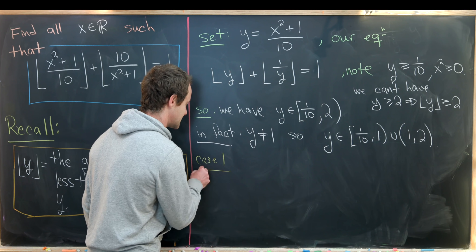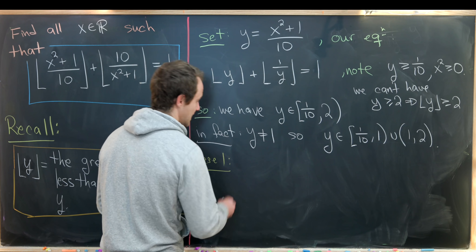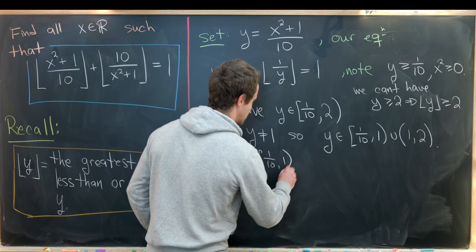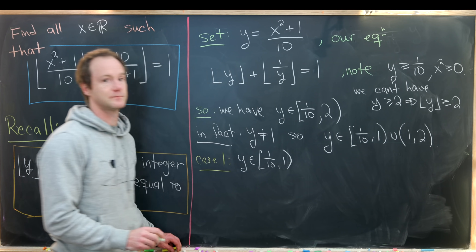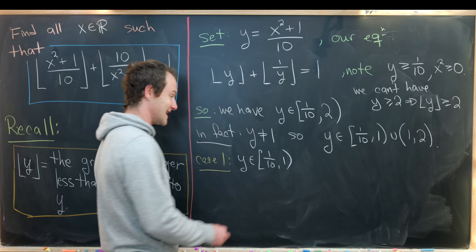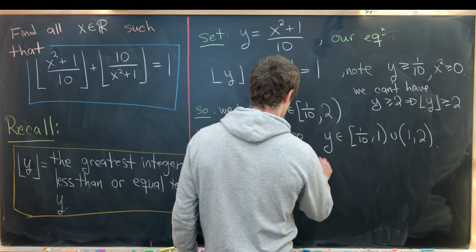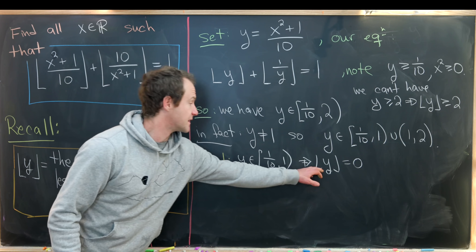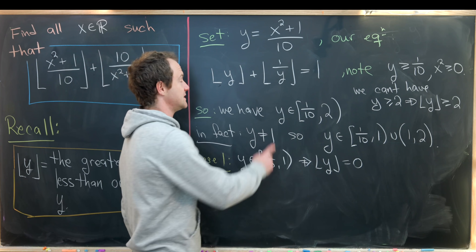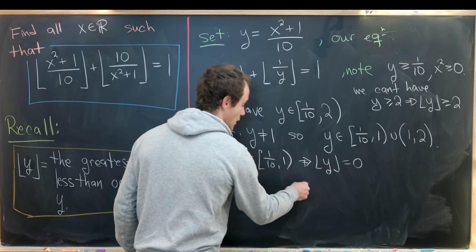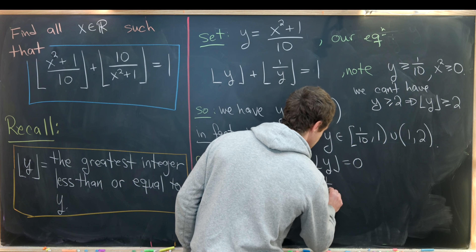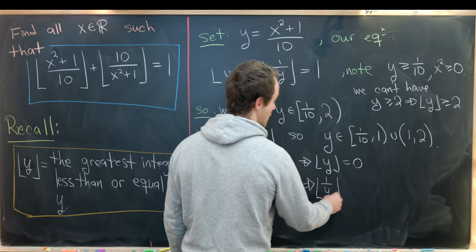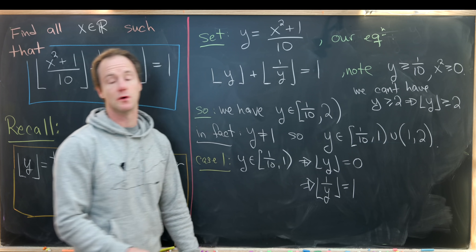Case 1: y is on the interval (1/10, 1). In this case, the floor of y equals 0. But if floor(y) equals 0, then the floor of 1 over y must equal 1 for the equation to hold. So floor(1/y) must equal 1.